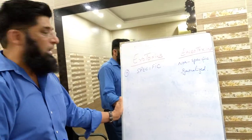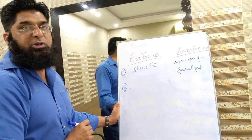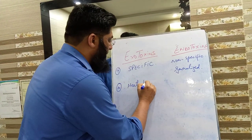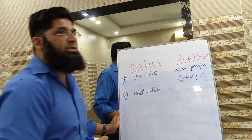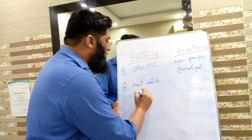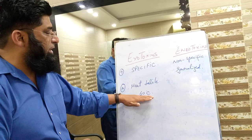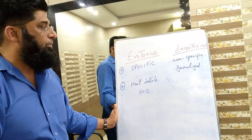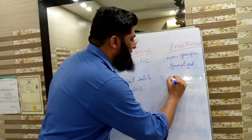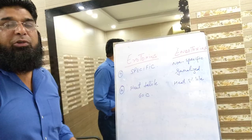Exotoxins are heat labile — they are unstable at higher temperatures and mostly become destroyed at temperatures above 60 degrees centigrade. On the other hand, endotoxins are heat stable and can tolerate very high temperatures.